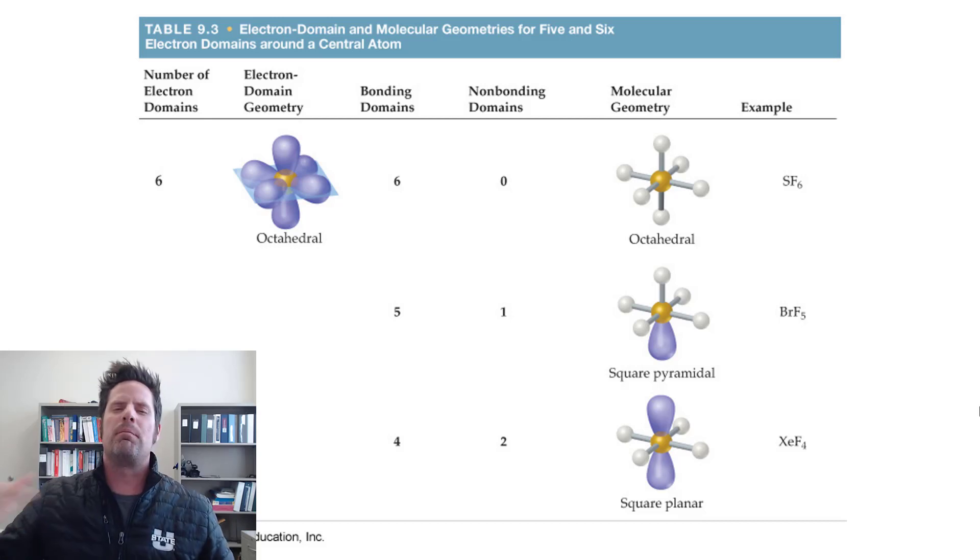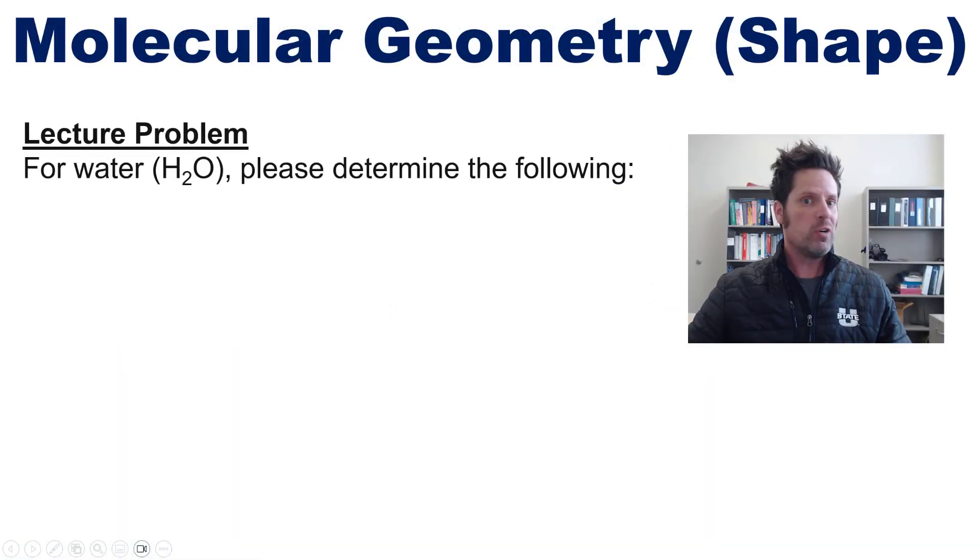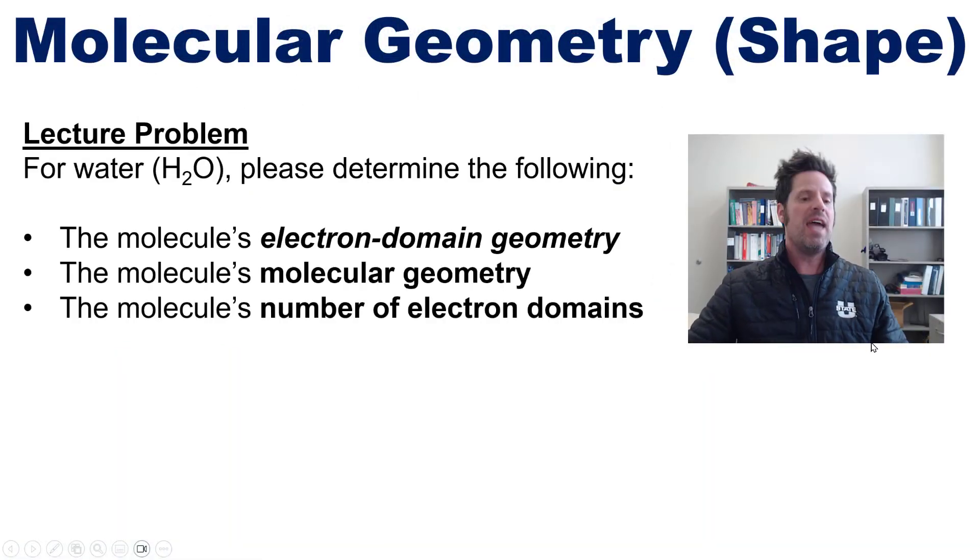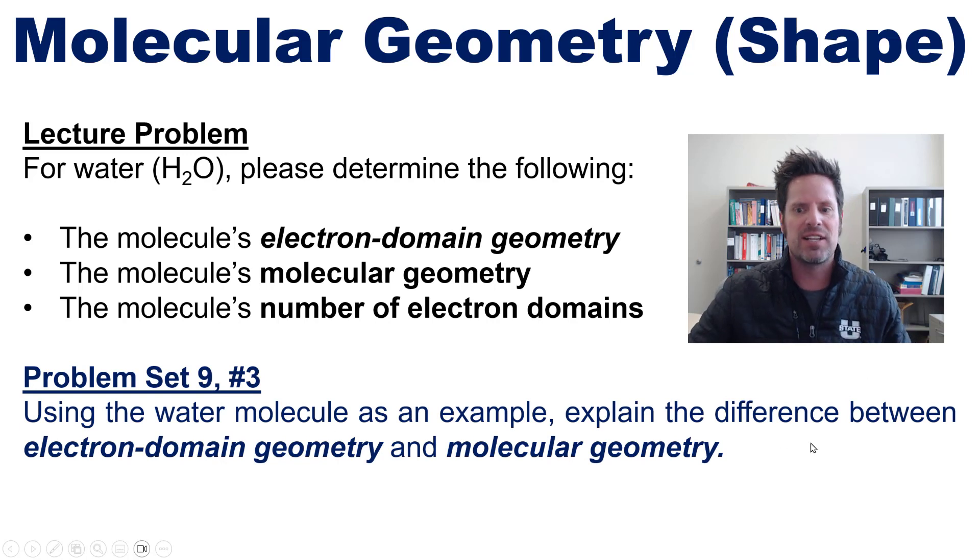This background then brings us to a beautiful lecture problem. For water, H2O, please determine each of the following things. And then, using water's geometry as an example, please explain the difference between electron domain geometry and molecular geometry.